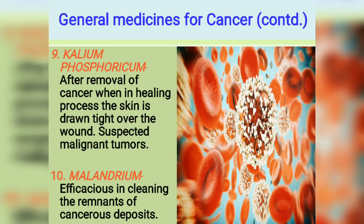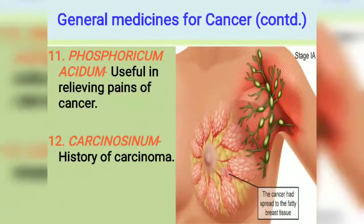Next is Melandrium — efficacious in clearing the remnants of cancerous deposits. Similar to how Calcarea Phosphorica works, Melandrium covers remaining cancerous deposits — if anything is left after radiotherapy or surgery, Melandrium will cover it.